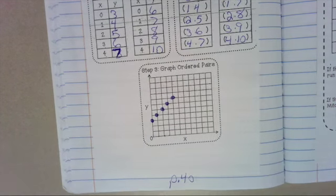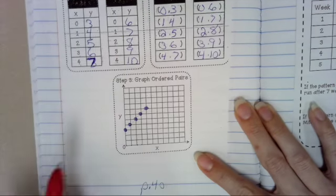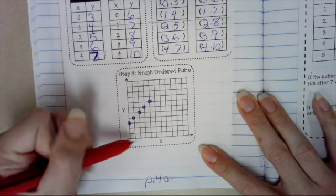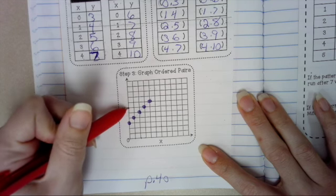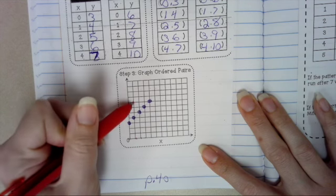All right. Our other pattern starts with 0, 6. So we start at the origin. We don't go right at all. And we go up 3, 4, 5, 6. 1, 7. We go right 1. Up 7.